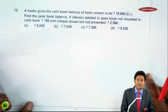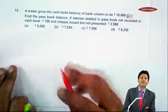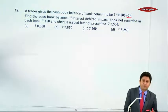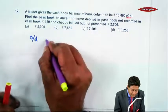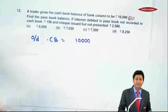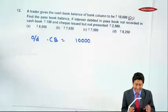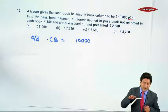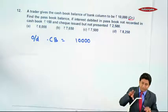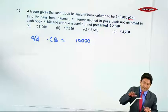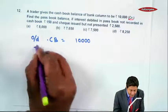Question 12: A trader gives the cash book balance of bank column to be ₹10,000 credit. This is a credit balance, meaning it's overdraft. So your starting point is overdraft as per cash book, which is ₹10,000. Find the pass book balance if interest debited in pass book not recorded in cash book is ₹150. Since overdraft, we add it back. Add interest not recorded: ₹150.